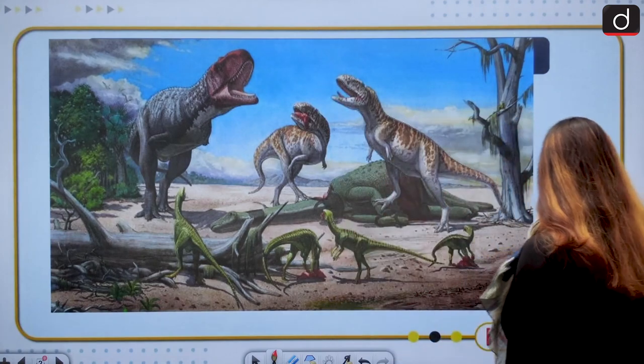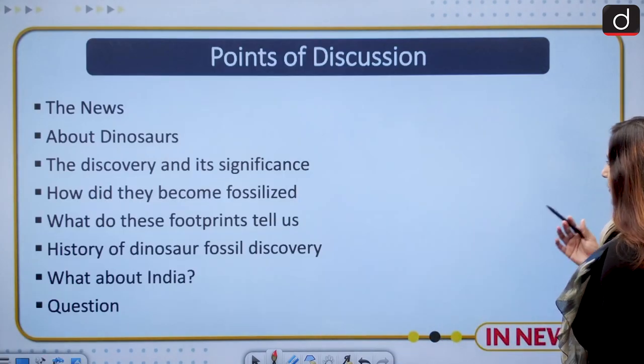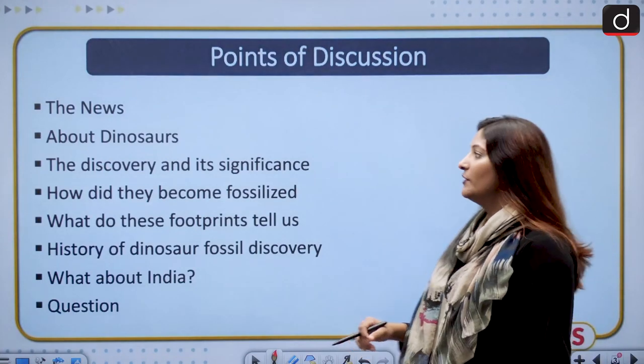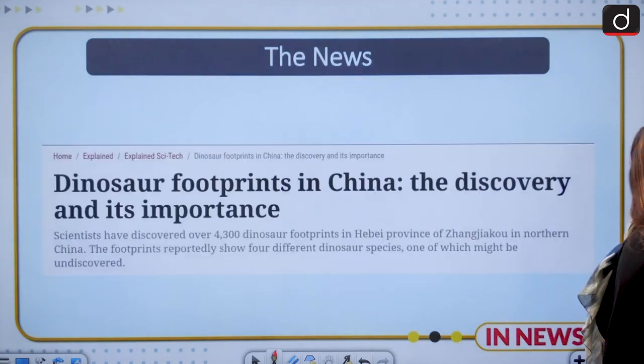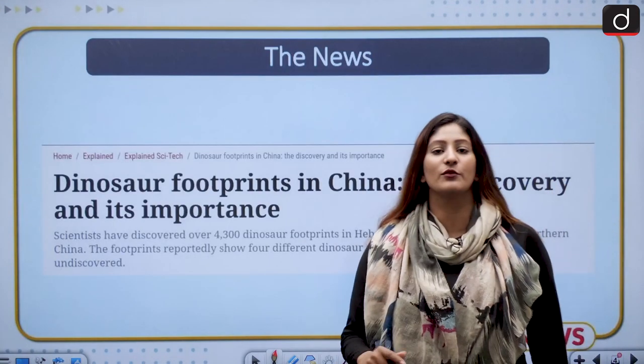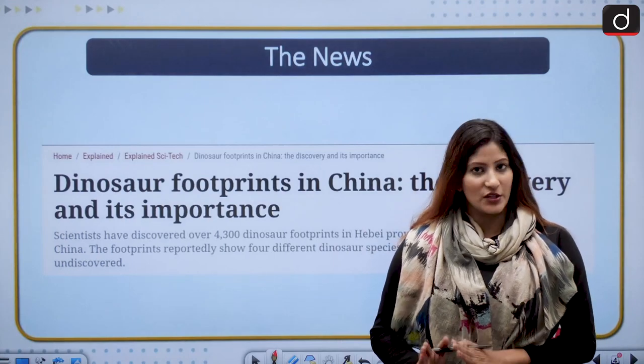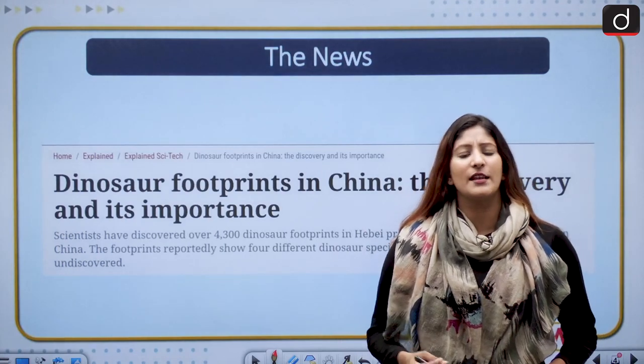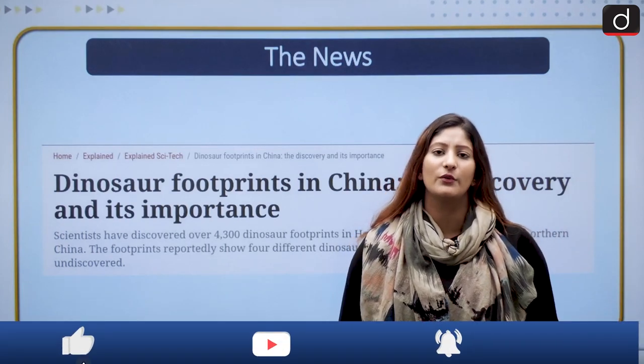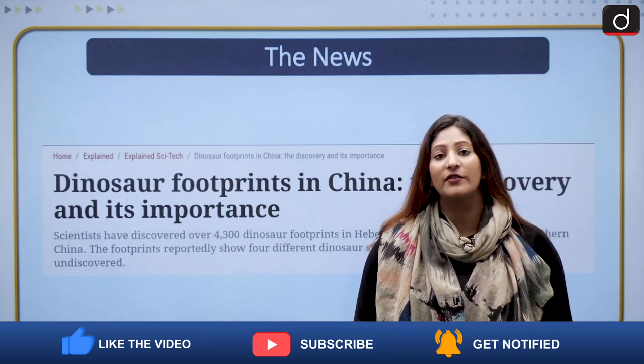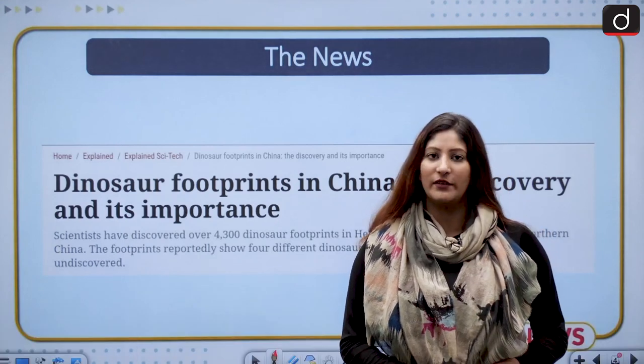Let us move on and talk about the various topics that we are going to discover under this. We have to analyze the entire segment from the perspective of both factual and conceptual. Conceptual in the sense, the Pangaea that is important for understanding the theory of continental drift given by Alfred Wegener will also be related to it.